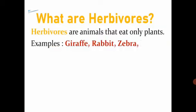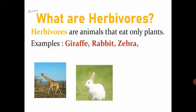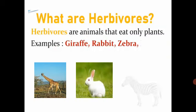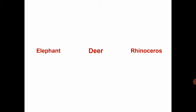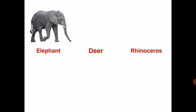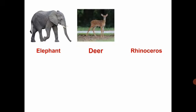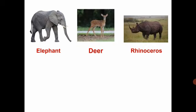What are herbivores? Herbivores are animals that eat only plants. For example: Giraffe, Rabbit, Zebra. Other examples of herbivores are Elephant, Deer, and Rhinoceros.